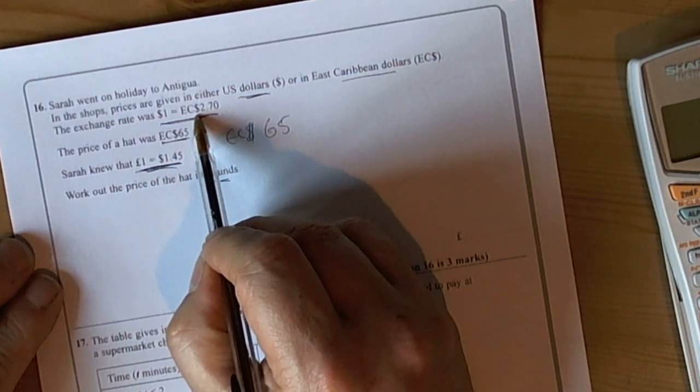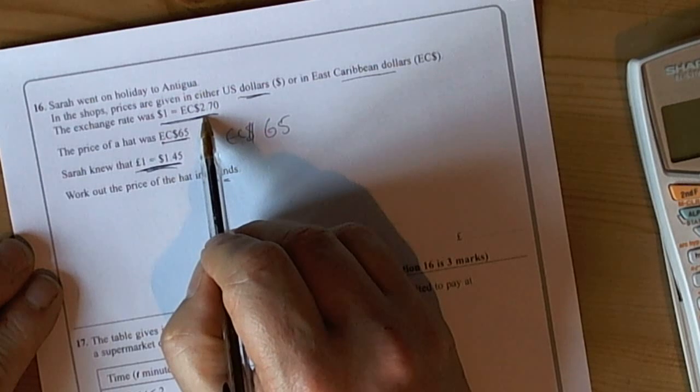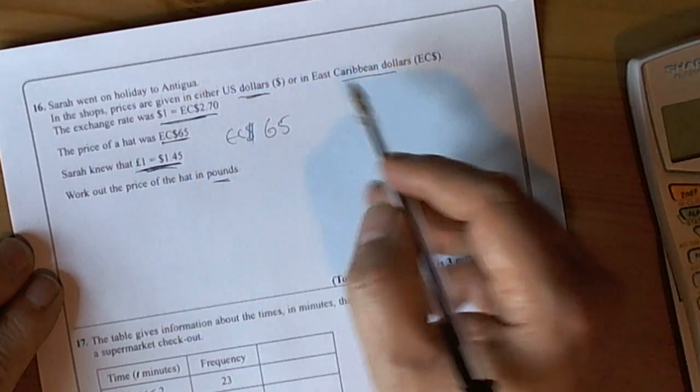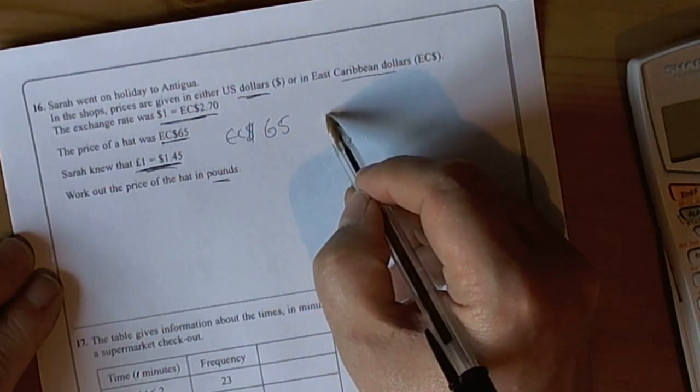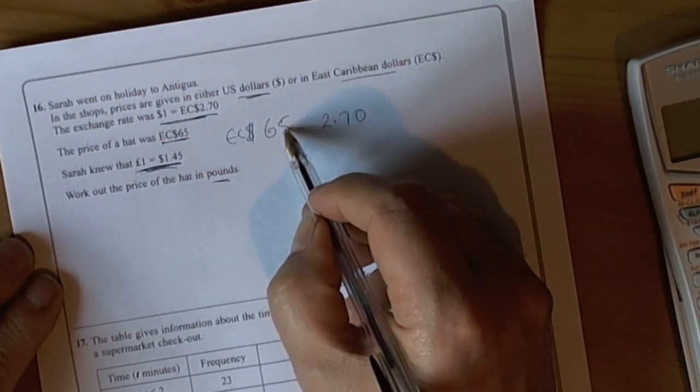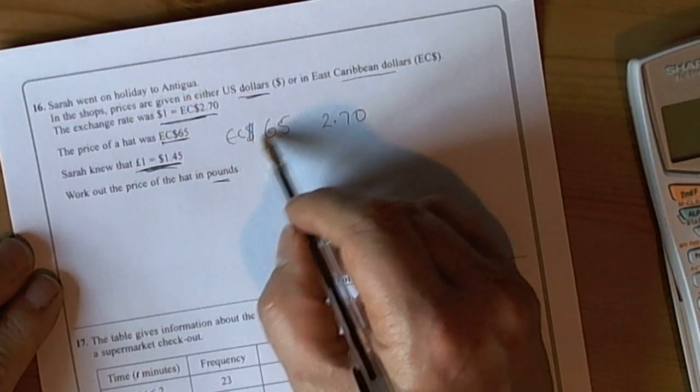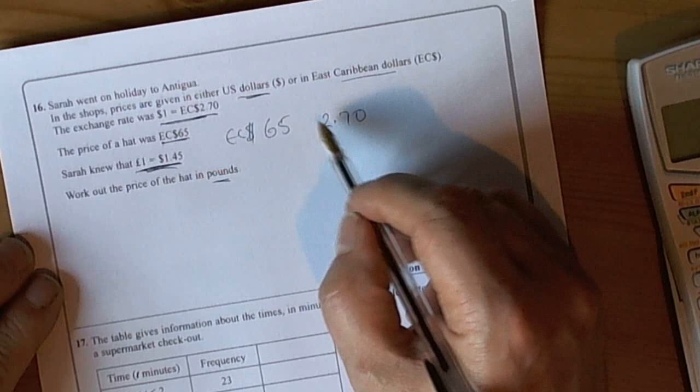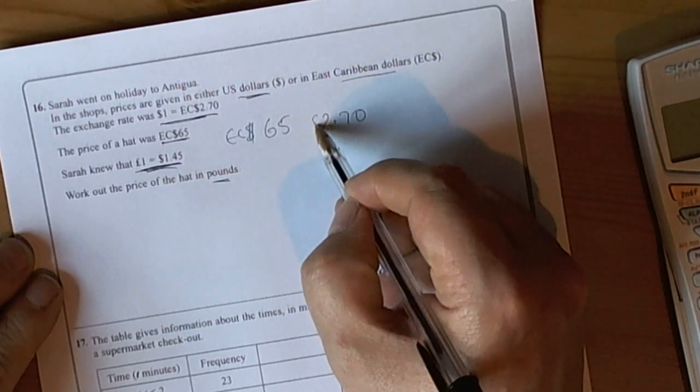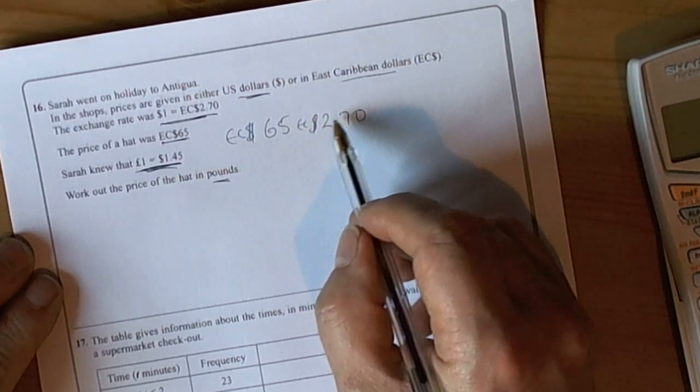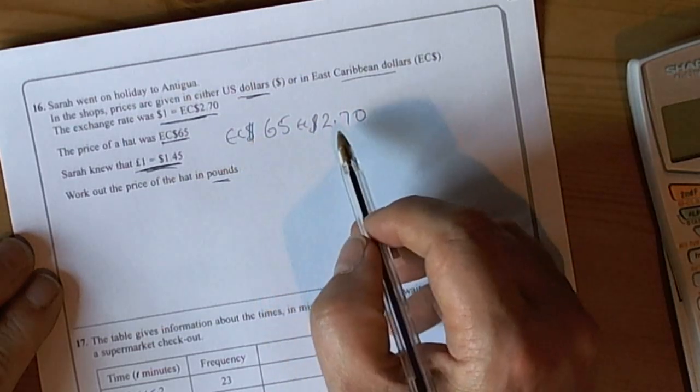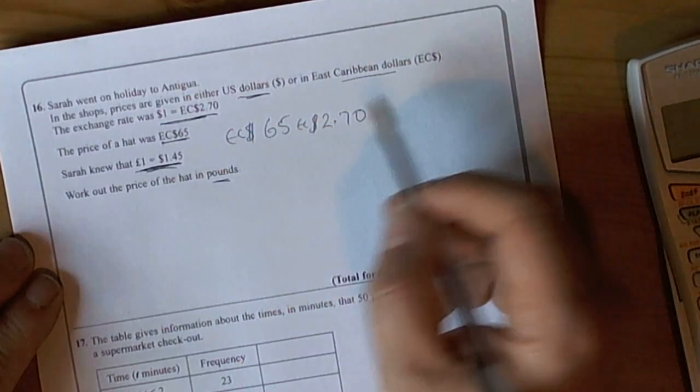We can see here they're telling us that one US dollar is the same as 2.7 East Caribbean dollars. So we're going to have to do something with those two numbers. We've got 65 East Caribbean dollars as the cost of the hat and we know the exchange rate is 2.7 of the East Caribbean dollars for every US dollar.